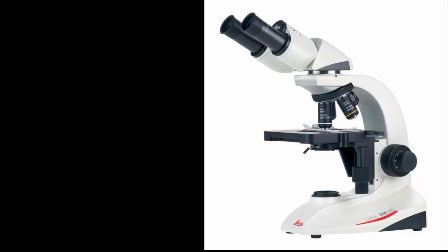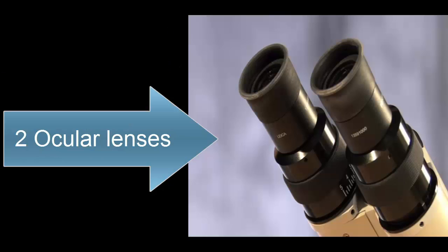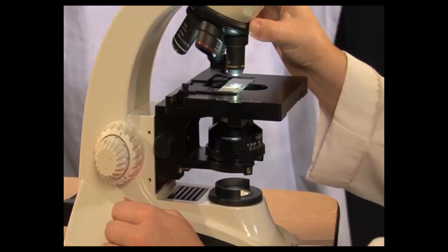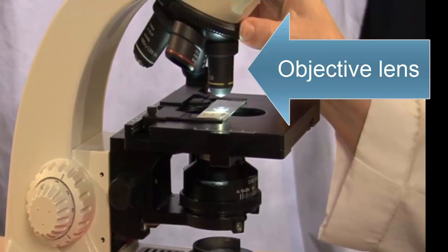In these lessons, you will learn about the binocular compound light microscope. Binocular means this microscope has two oculars for viewing a specimen with both eyes, and compound means this microscope uses two sets of lenses, the ocular lens plus the objective lens, to magnify the images.